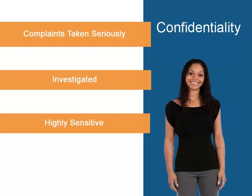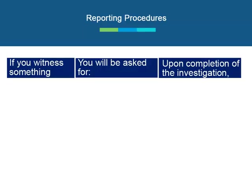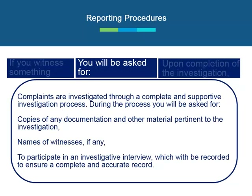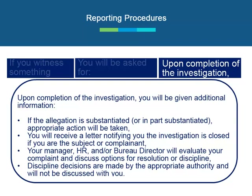Now let's review reporting procedures. If you witness something, you should make note of and report who, what, where, and when. Complaints are investigated through a complete and supportive investigation process. During the process, you will be asked for copies of any documentation and other material pertinent to the investigation, names of witnesses if any, and to participate in an investigative interview, which will be recorded to ensure a complete and accurate record. Upon completion of the investigation, you will be given additional information. If the allegation is substantiated or in part substantiated, appropriate action will be taken. You will receive a letter notifying you the investigation is closed if you are the subject or complainant. Your manager, HR, and/or bureau director will evaluate your complaint and discuss options for resolution or discipline.